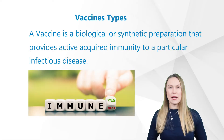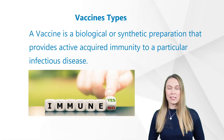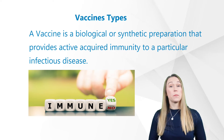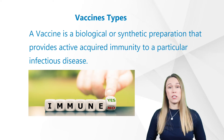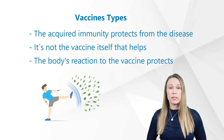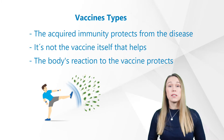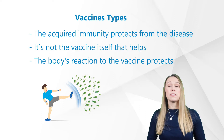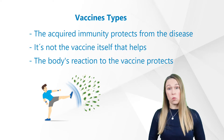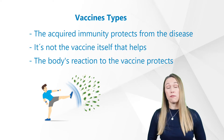Let's start with a small flashback on what vaccines are. A vaccine is a biological or synthetic preparation that provides active acquired immunity to a particular infectious disease, for example, influenza. The acquired immunity protects the patient from the disease. It's not the vaccine itself that helps the patient — it's the body's reaction to the vaccine that protects one from getting sick from the infection.